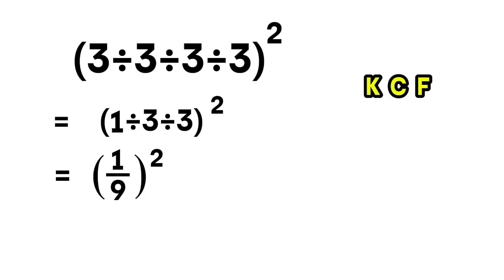Now the question becomes 1 ninth squared. Finally, we square 1 ninth. That's 1 ninth times 1 ninth, which equals 1 over 81. And that, my friends, is the correct answer.